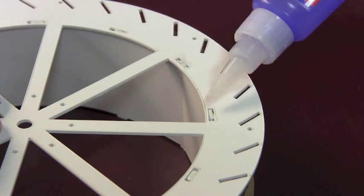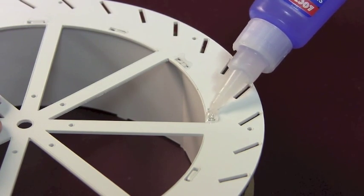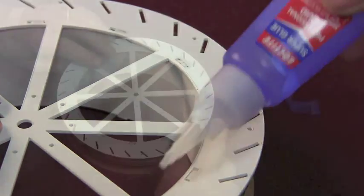After you've assembled the wheel to the internal hub, super glue both sides, slots, tabs, and hub to the wheel.